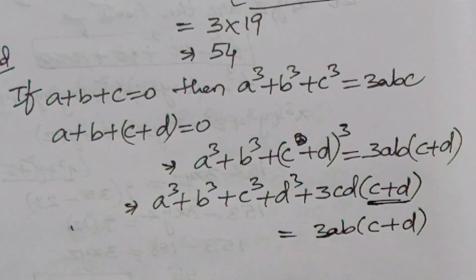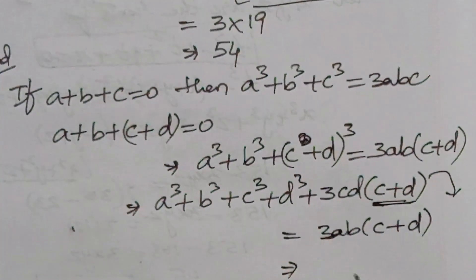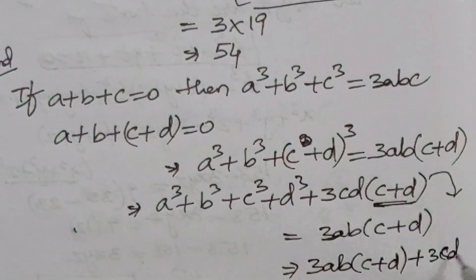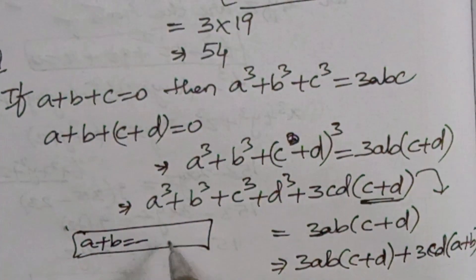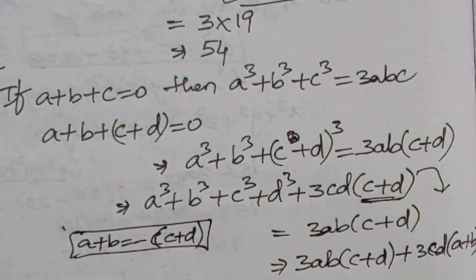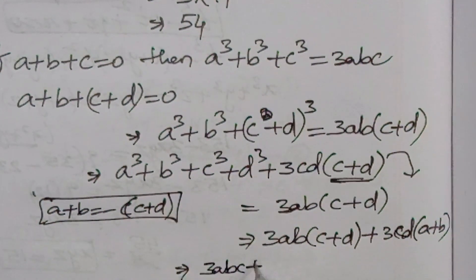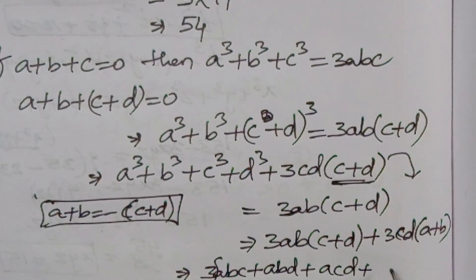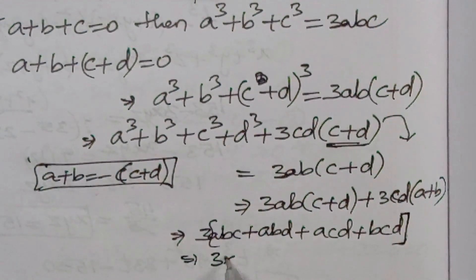In the place of (c + d) we write −(a + b). Sending terms across: a³ + b³ + c³ + d³ = 3ab(c + d) + 3cd(a + b). Since a + b = −(c + d), the two terms both become positive. Taking 3 common: 3(abc + abd + acd + bcd). This value is 3 × 19 = 57.